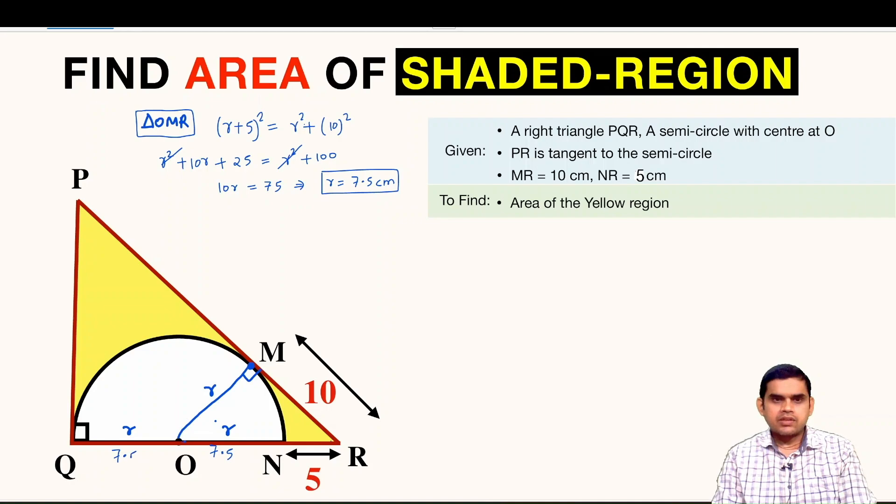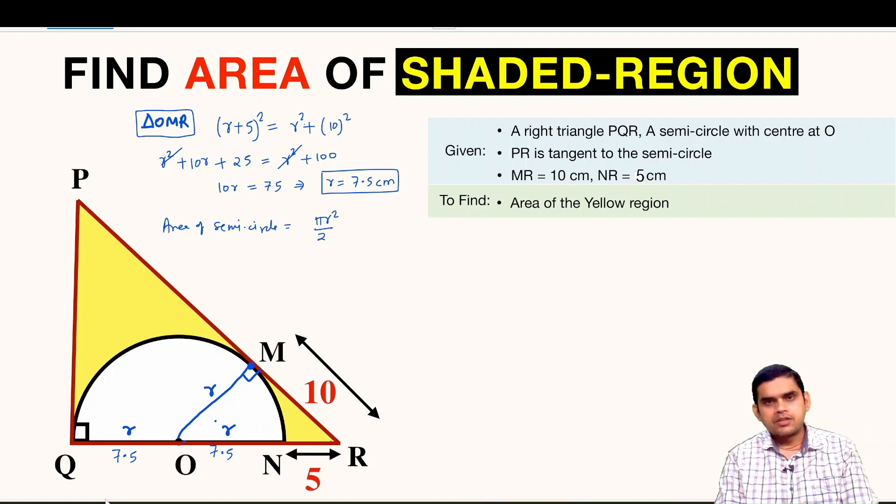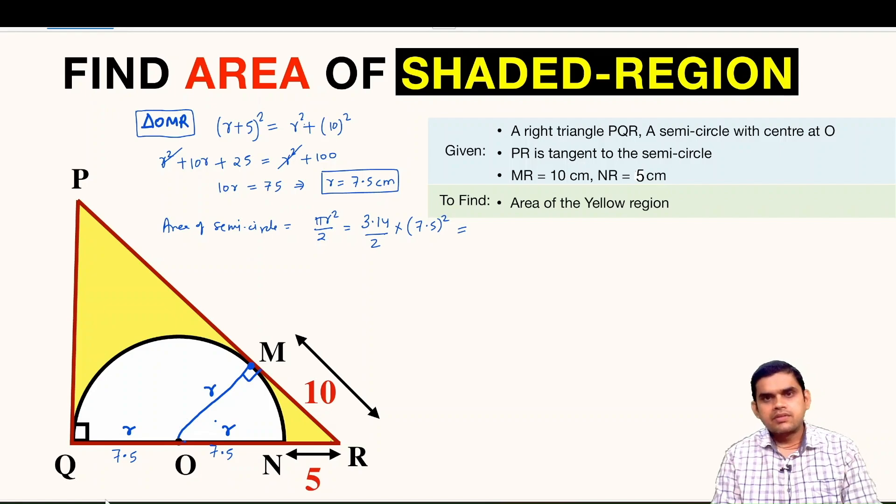So using the radius we can find the area of this semicircle. Area of semicircle is πR² divided by 2. So we can take π as either 3.14 or 22 over 7, whatever you like, divided by 2 times 7.5 whole square.